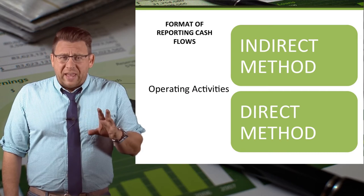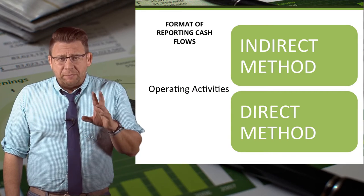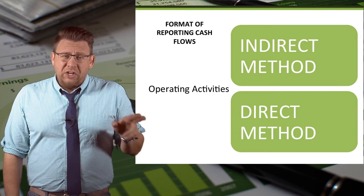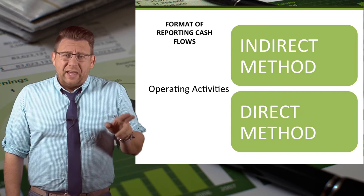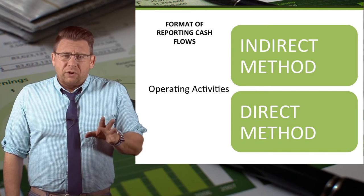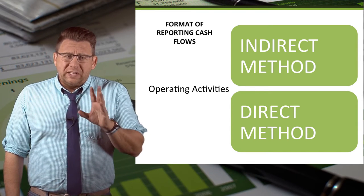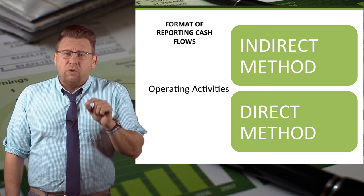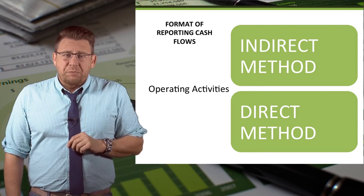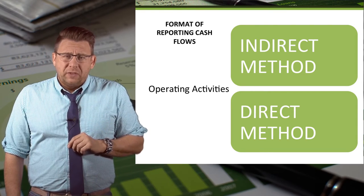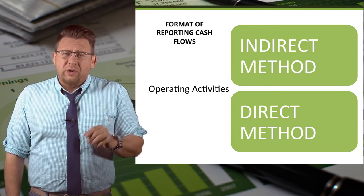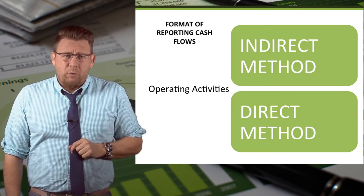The statement of cash flows can be reported two different ways: the indirect method and the direct method. However, the only difference between the two methods is how the operating activities section is presented. Investing and financing activities are always reported the same way.